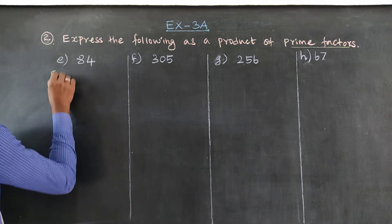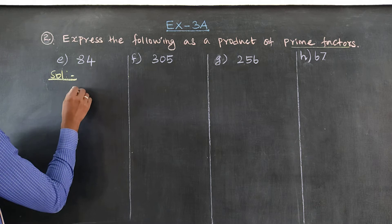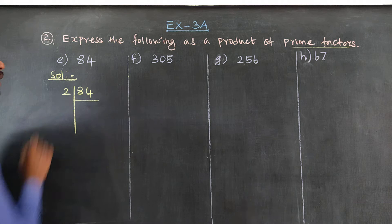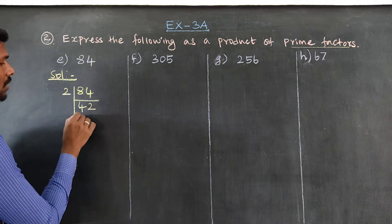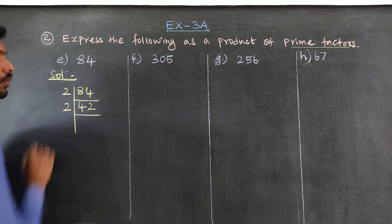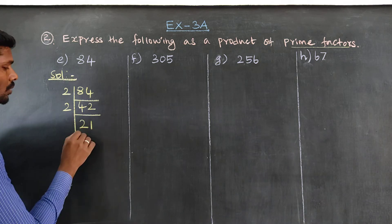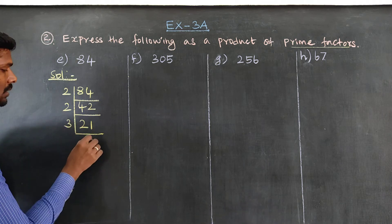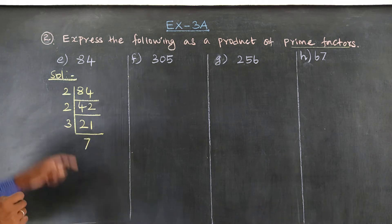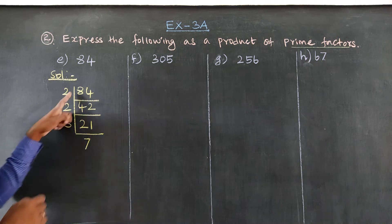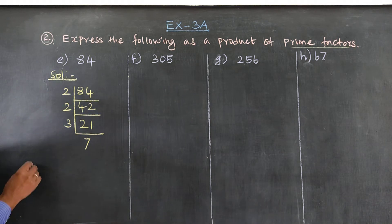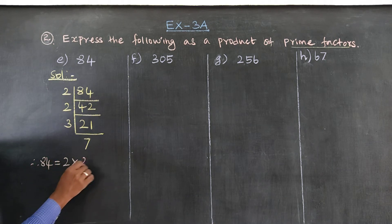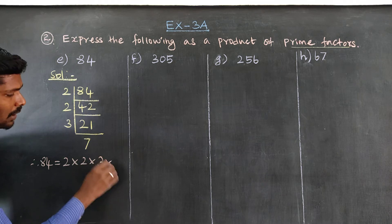For number 84: 84 divided by 2 equals 42, 42 divided by 2 equals 21, 21 divided by 3 equals 7. Since 7 is a prime number, the prime factors of 84 are: 84 = 2 × 2 × 3 × 7.